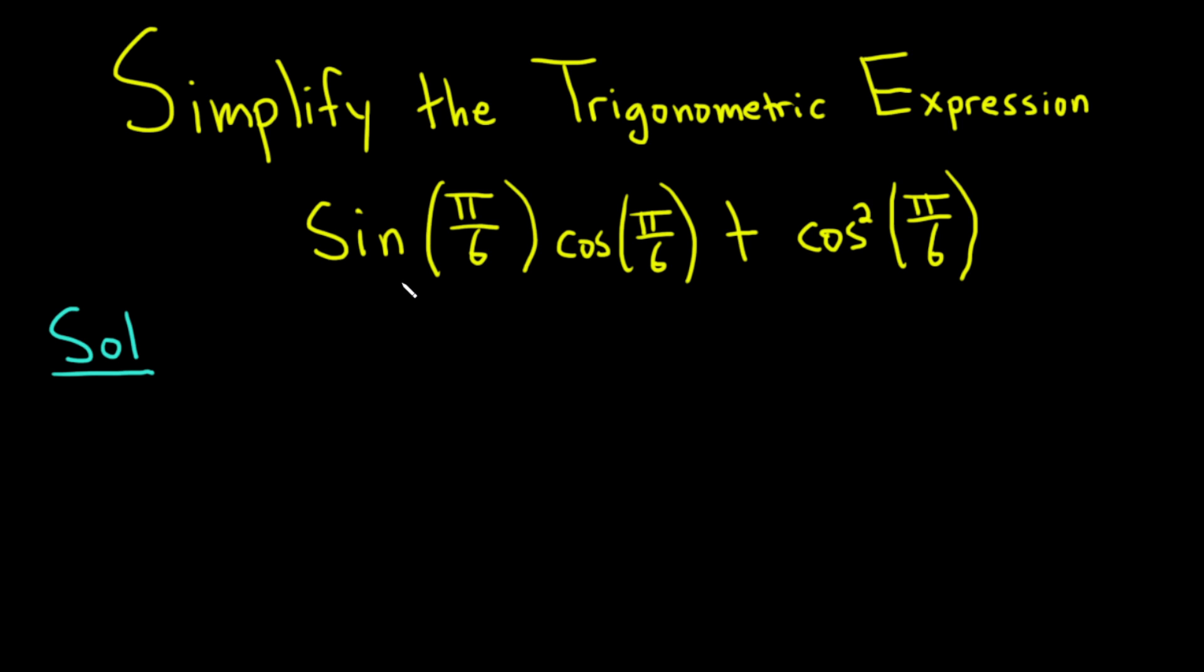So recall that the sine of pi over 6 is 1 half, so this is going to give us 1 half. And the cosine of pi over 6 is the square root of 3 over 2.